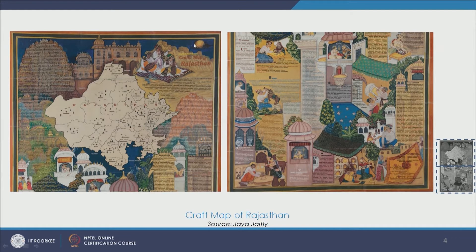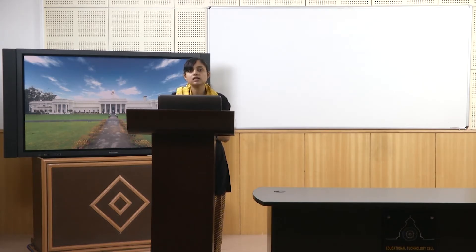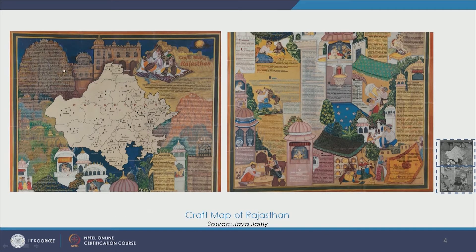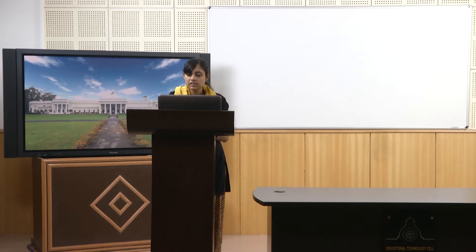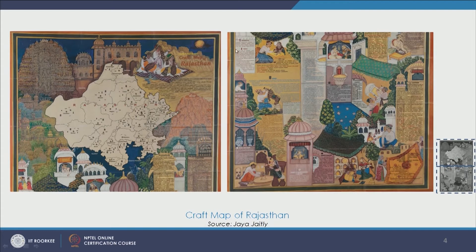I would like to begin by discussing this very interesting and graphical craft map of Rajasthan. These craft maps of India are developed by Jayajetleji, and each state has a different craft map — they celebrate and discuss varied art and craft forms of that particular state. When we talk about Rajasthan, it is so rich in these craft forms. We see different interior architecture styles, the Jaipur Hawa Mahal, different elements, space painting elements, dome and chhatri, and mention of painting. Different paintings from Rajasthan, stone work, and different kinds of metal works are also visible in this map.